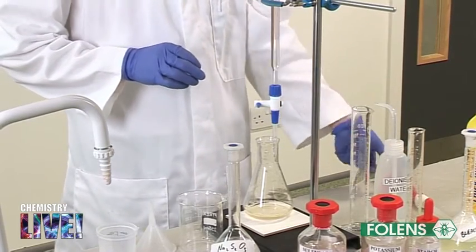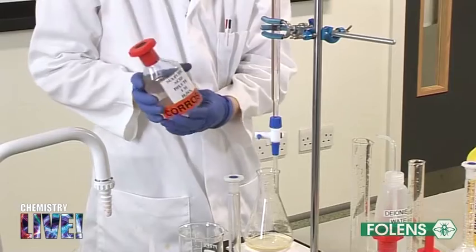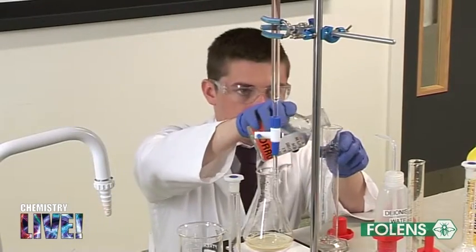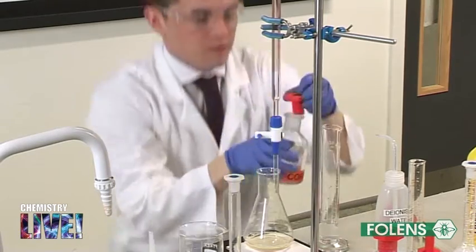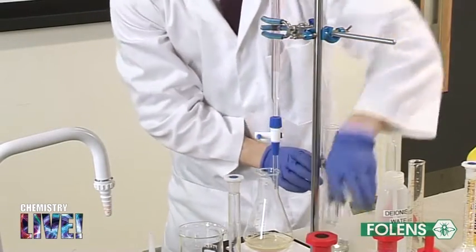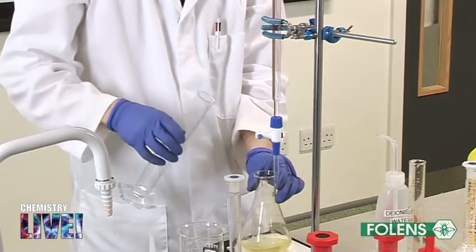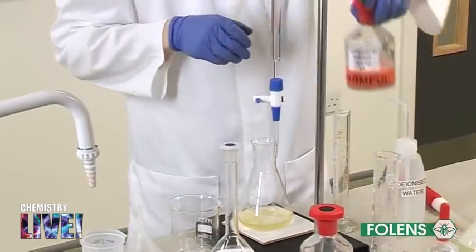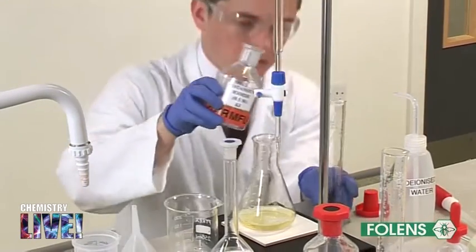Using a graduated cylinder, add 20 cm³ approximately of diluted sulfuric acid, followed by 10 cm³ of 0.5 molar potassium iodide solution to the conical flask.